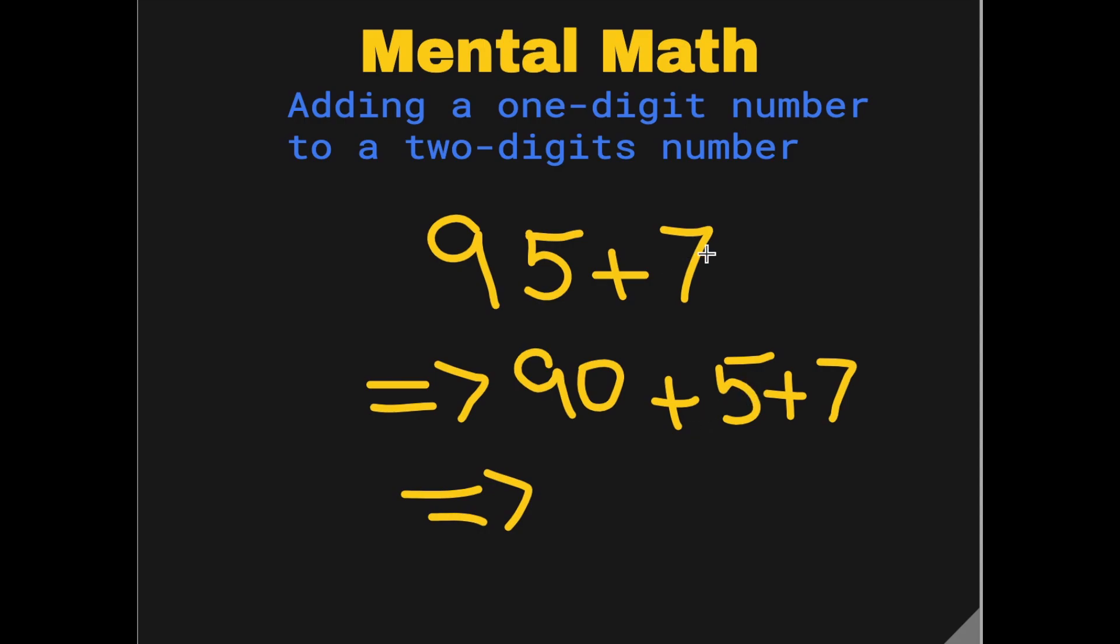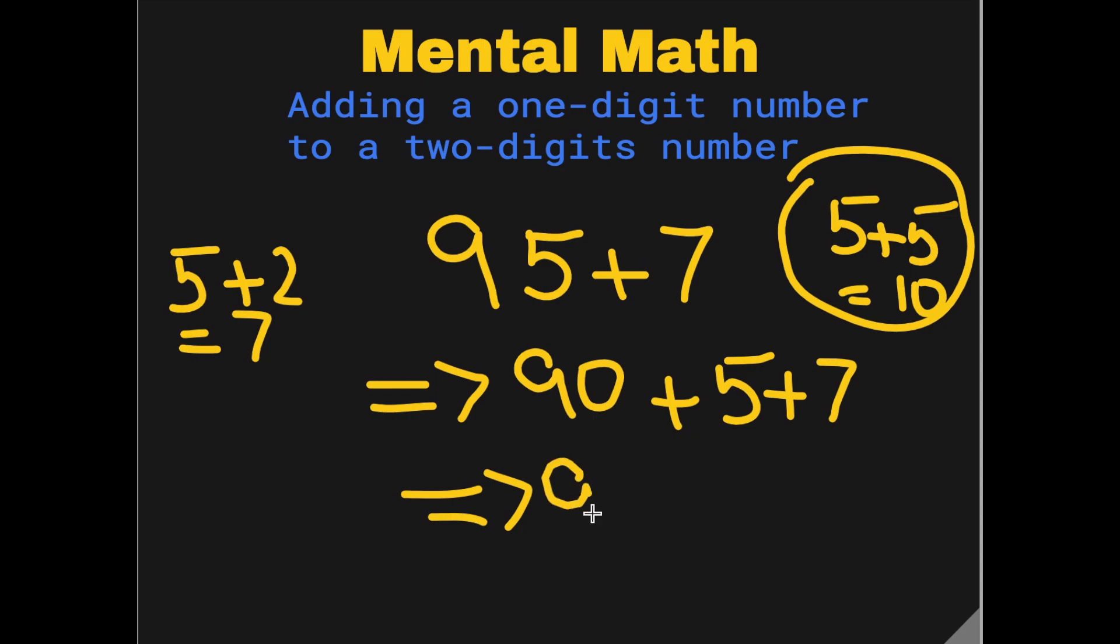We know that 5 plus 5 is equal to 10, and we also know that we can split 7 into 5 plus 2. So using these tricks we will be arriving at 102.